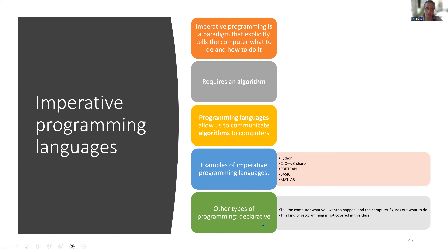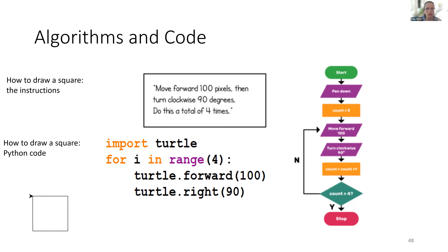There are other kinds of programming languages, such as declarative, which tells the computer what you want to happen and the computer figures out what to do — this kind of programming is not covered in our class. Think about machine learning: we tell a computer we want it to learn how to pick up a cup or design a drug to cure cancer; we provide information about what we want done, and the computer fills in the gaps through a learning process similar to how neurons in our brain work.